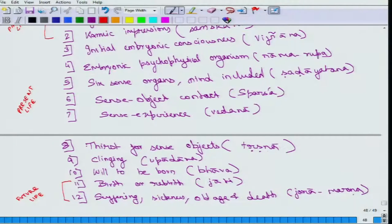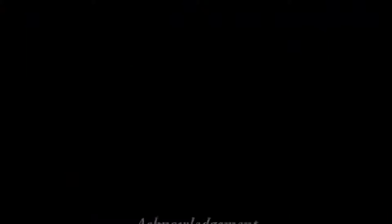These 12-fold chain of causation is often referred to as Dharma Chakra or the wheel of becoming. It is referred to as Bhava Chakra or Dvadasa Nidana. This is the nature of suffering. Now let us come to the Third Noble Truth.